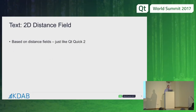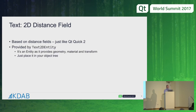Very similarly, we have a distance field text facility now as well. Just like QtQuick, it's provided by a Text2D entity. It basically renders distance field text into a texture and then puts that on a textured plane, so you can have 2D text in your scene very easily.